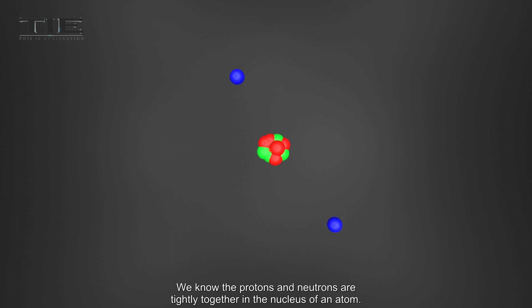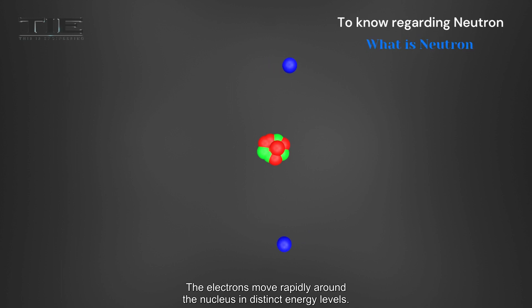We know the protons and neutrons are tightly together in the nucleus of an atom. The electrons move rapidly around the nucleus in distinct energy levels.